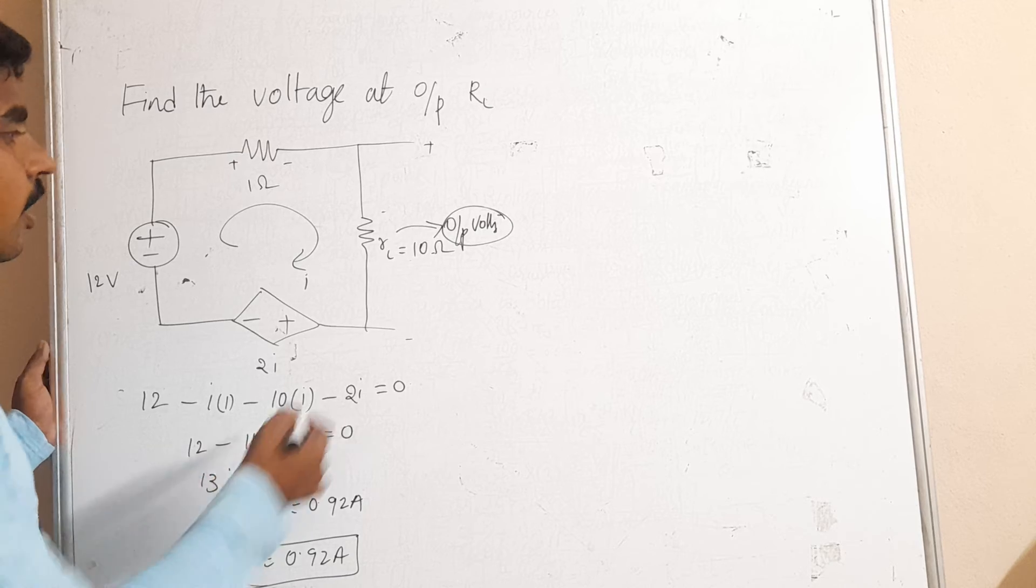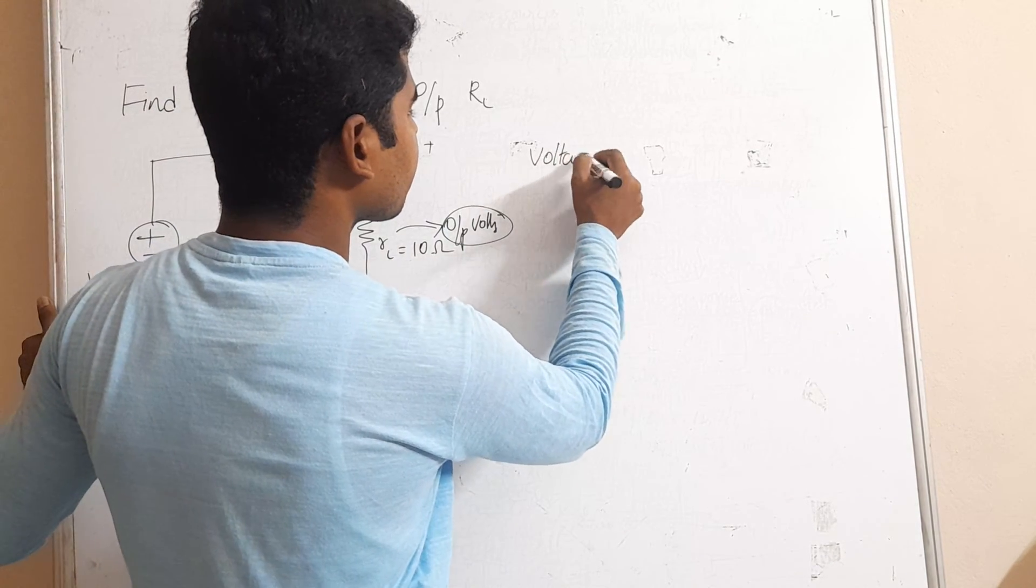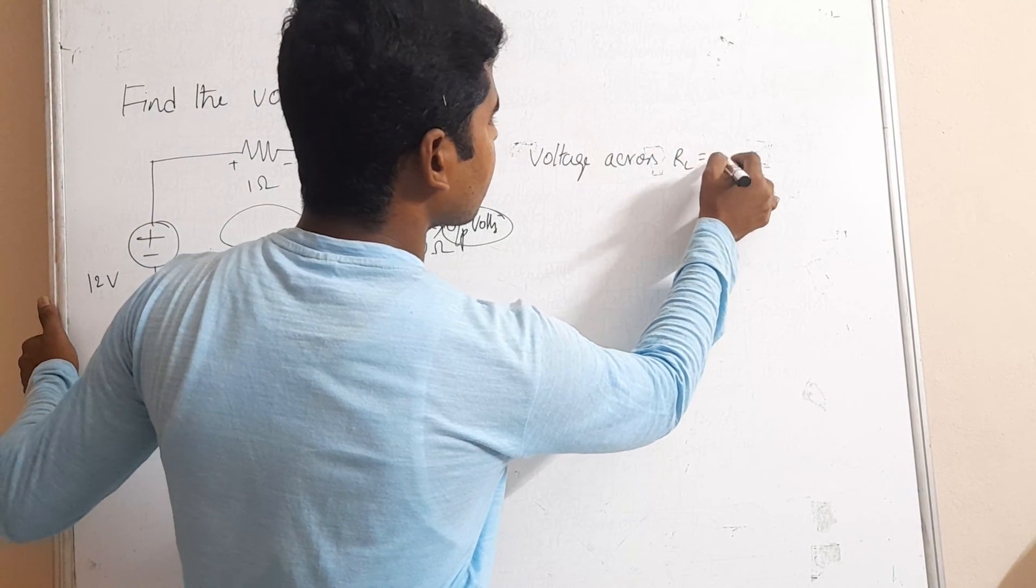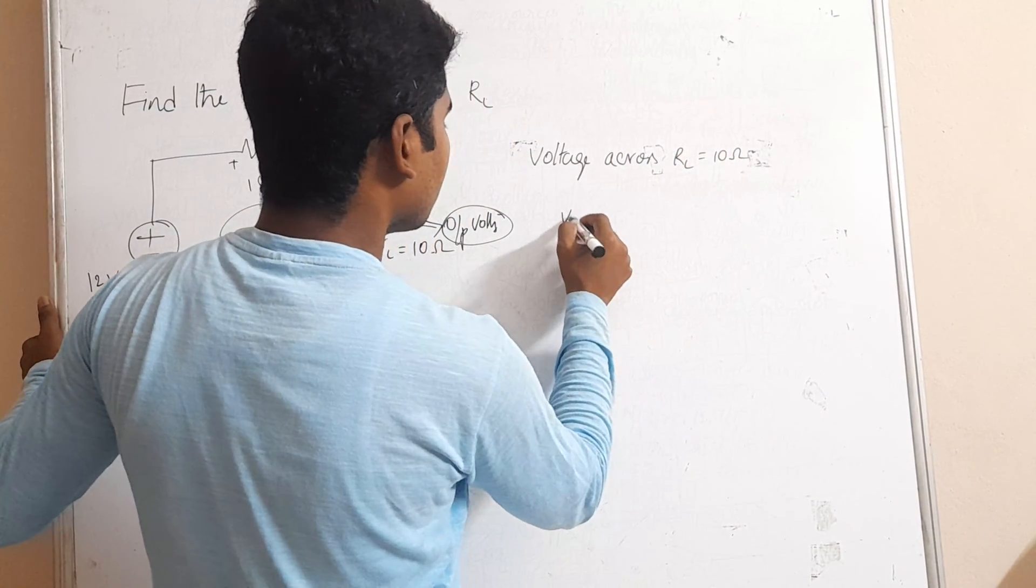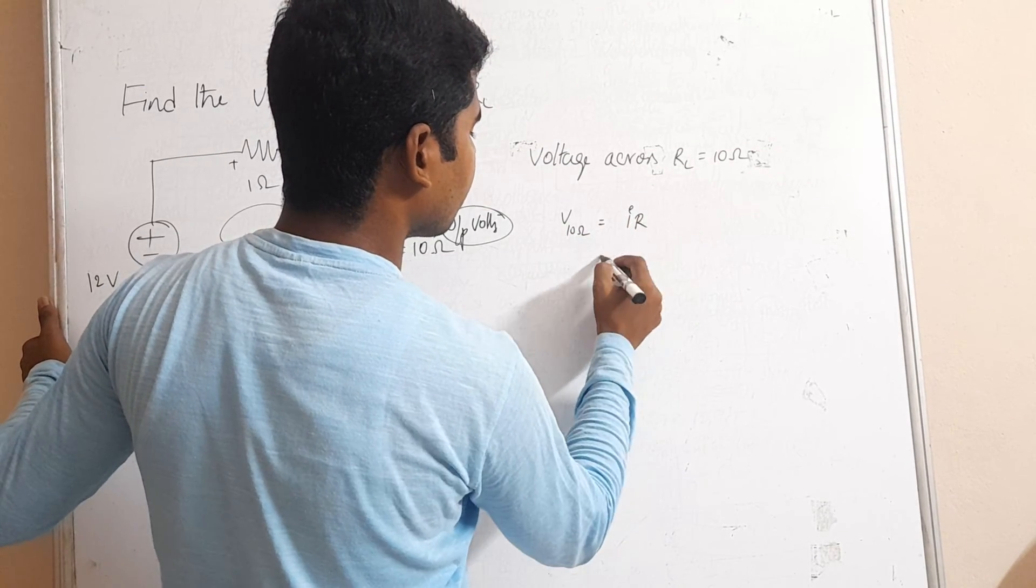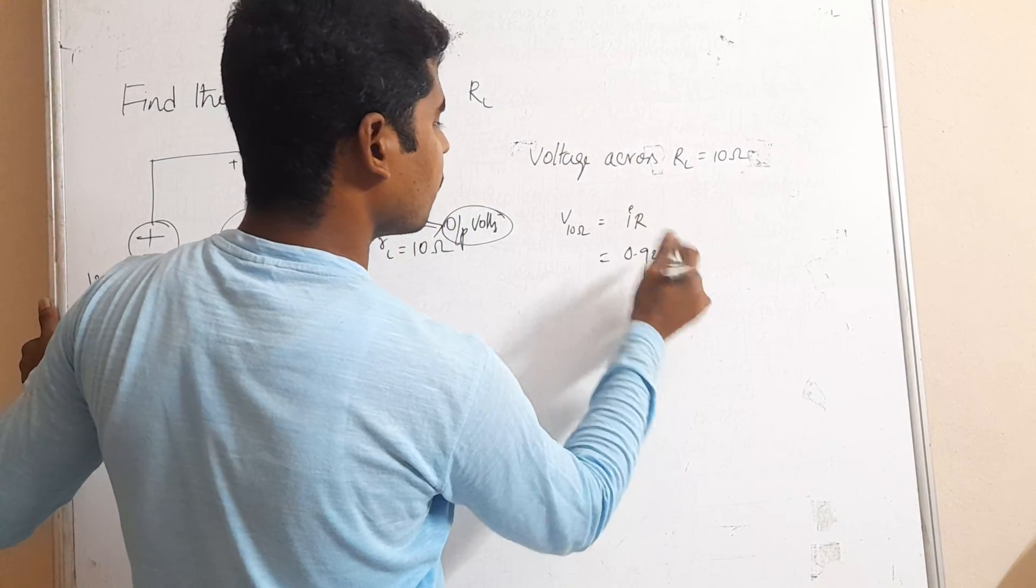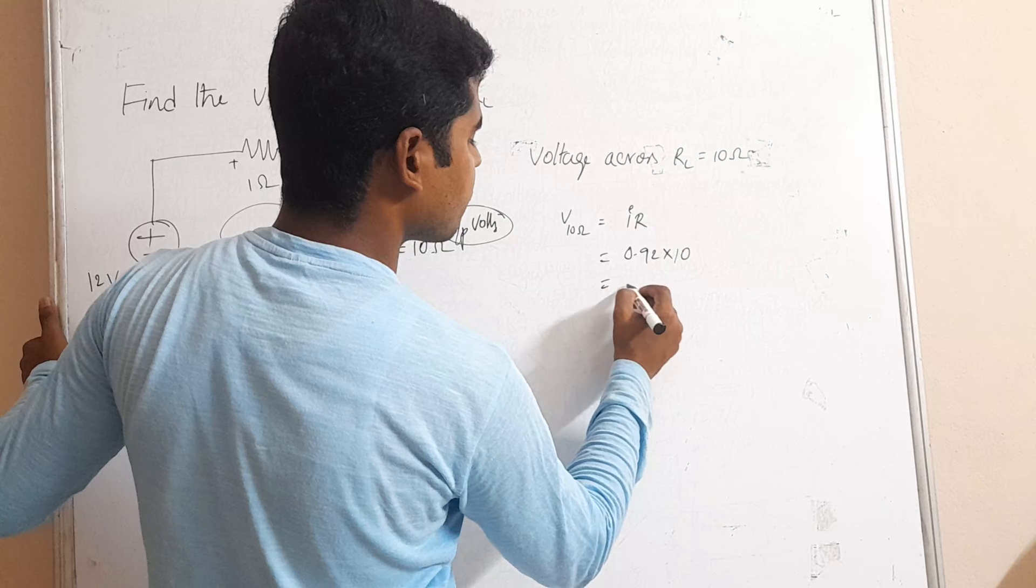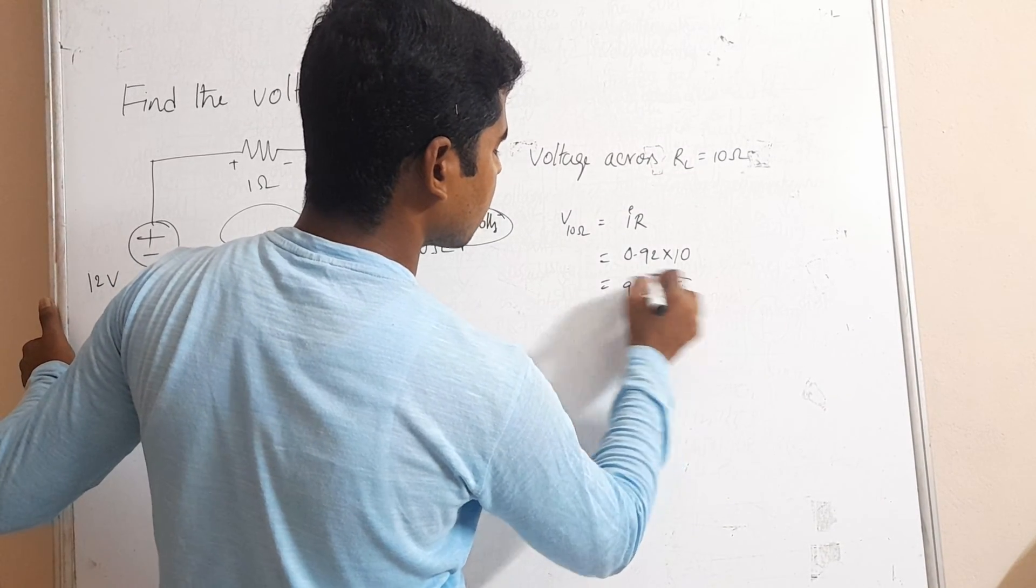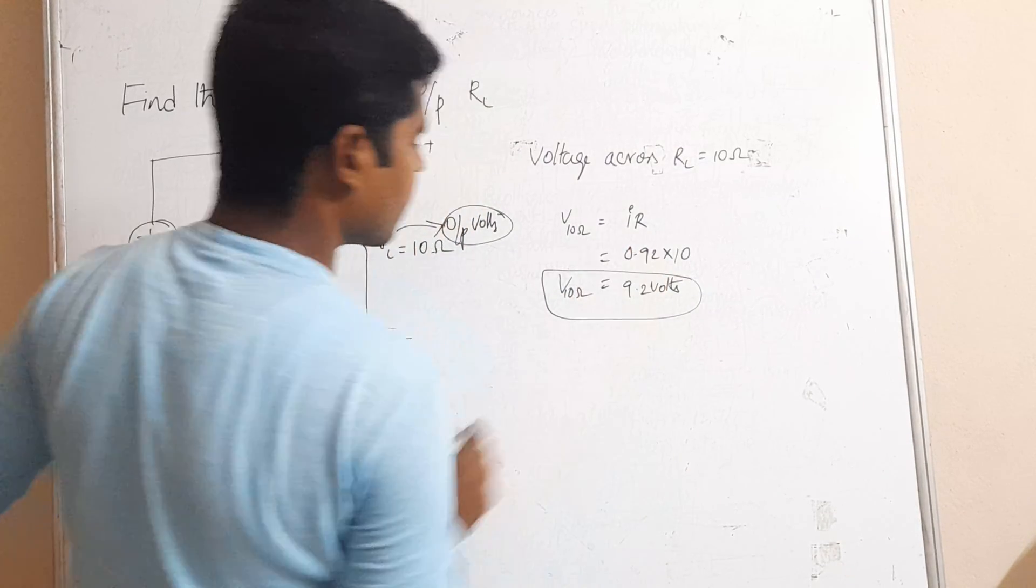Now we have to find out the voltage across RL. That is equal to, voltage across 10 ohms is V, 10 ohms is equal to I into R in general form. Therefore I is equal to 0.92, RL value is equal to 10, that gives rise to 9.2 volts.